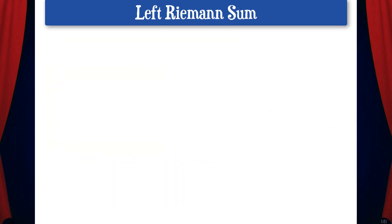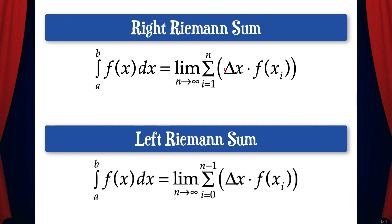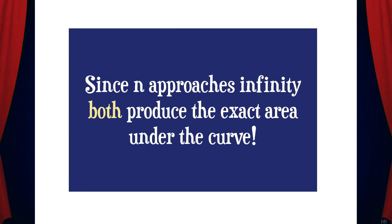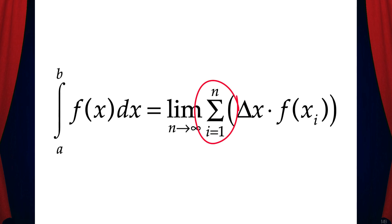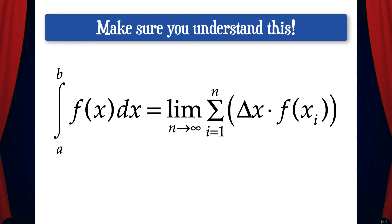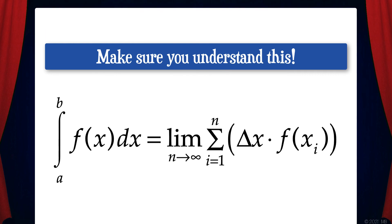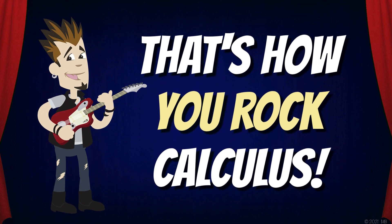Now you might be wondering why did I use a right Riemann sum, where i goes from 1 to n, instead of a left Riemann sum, where i goes from 0 to n minus 1. And the truth is, it doesn't matter, because we're letting n go to infinity. So both would produce the exact area under the curve. For the examples that we're going to do, we're going to be using this form, where i goes from 1 to n. And speaking of examples, we'll look at those in the next video. For now, make sure that you understand the theory behind how to write a definite integral as the limit of a Riemann sum. And that's how you rock calculus!